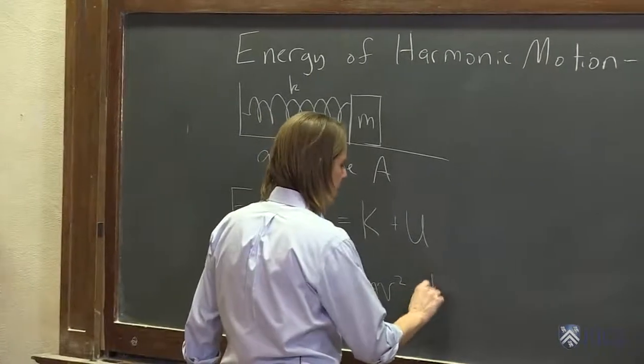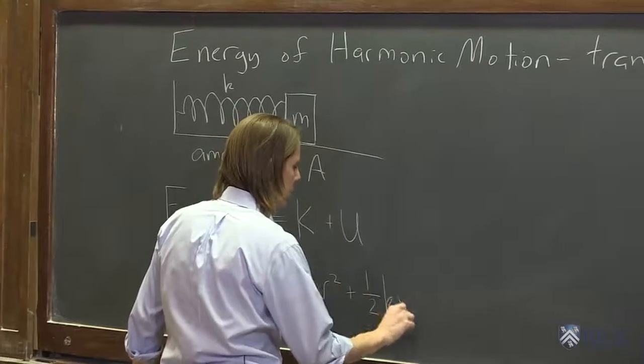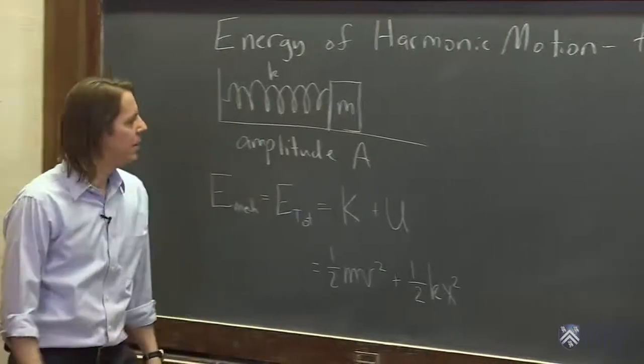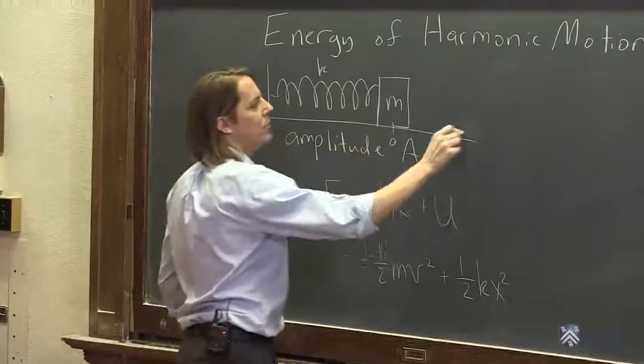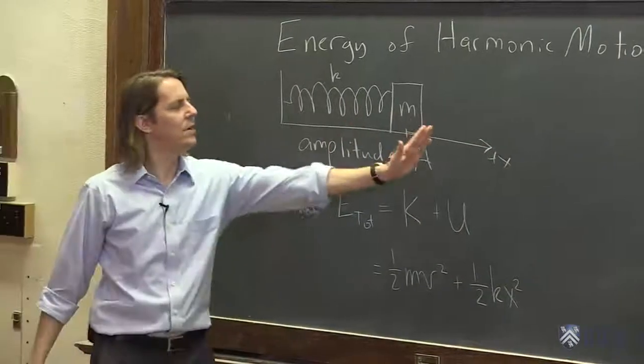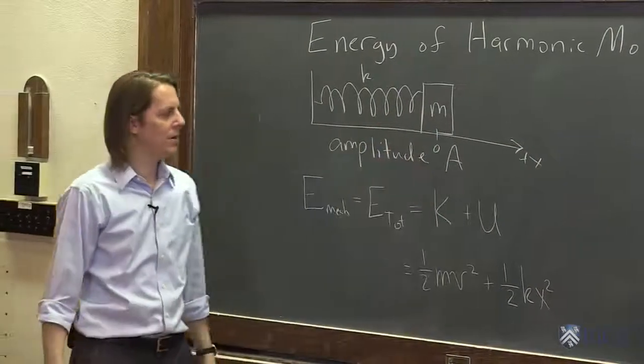The energy of the spring is one half k x squared. If this is zero where it likes to rest, and this is the x-axis, then as you deviate from zero, you have energy one half k x squared.